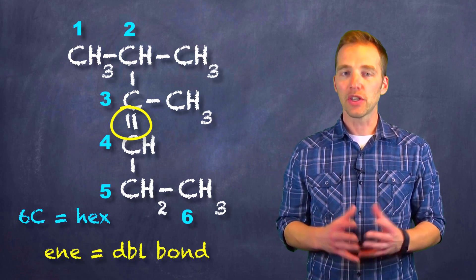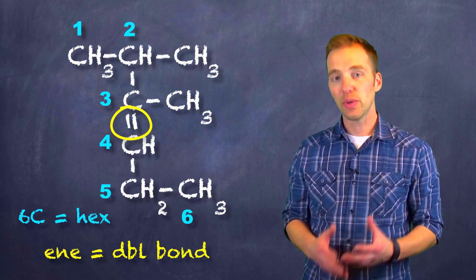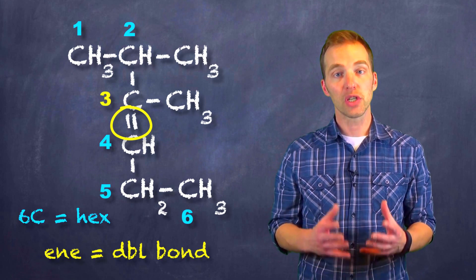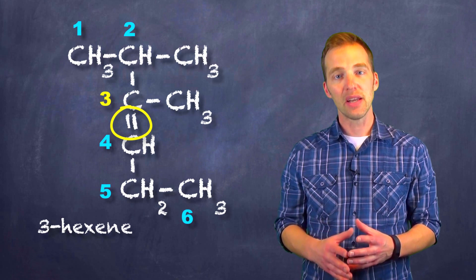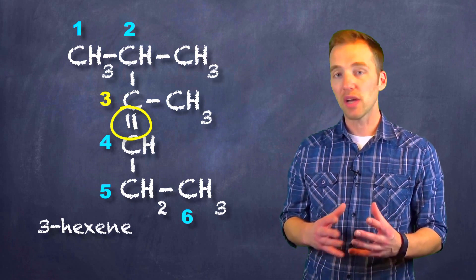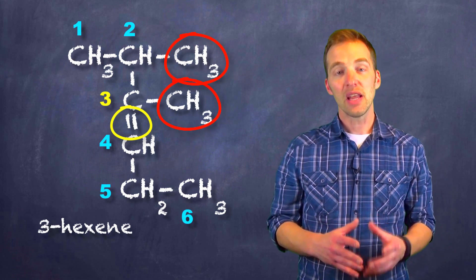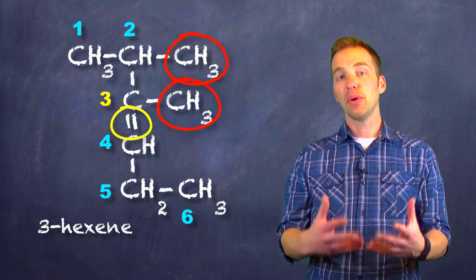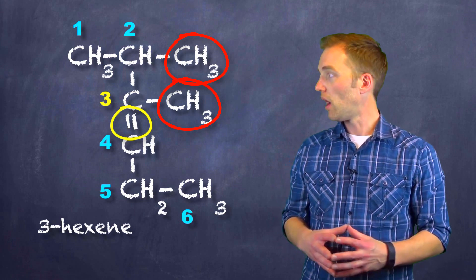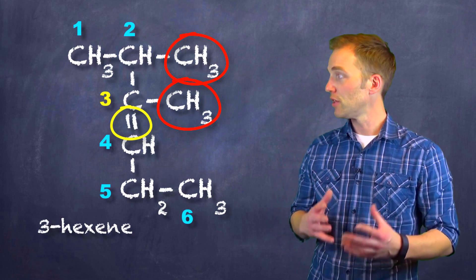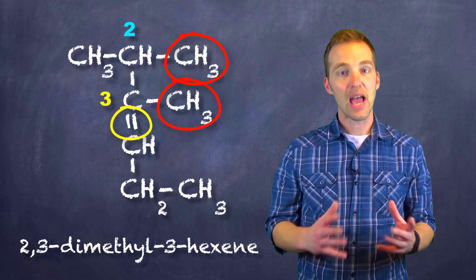But because the multiple bond could appear in more than one place, we have to indicate its position. And if we count from this end, we can see that that multiple bond is going to start on the third carbon. So we call it three-hexene. And the reason that I counted from this end is because I'm trying to have the lowest possible location numbers for the branches. And therefore, now we can start putting on those branched names as well, those alkyl groups into our molecule name. And we refer to this as two, three-dimethyl, because there are two methyl groups, three-hexene.